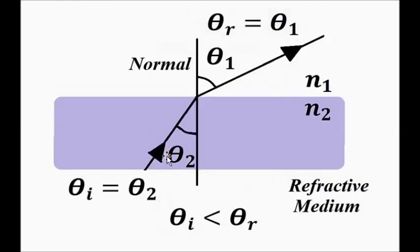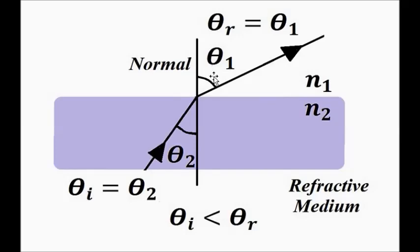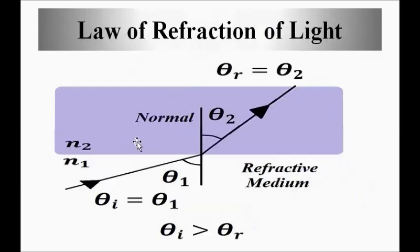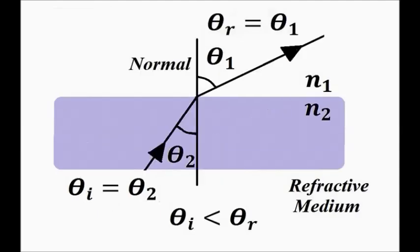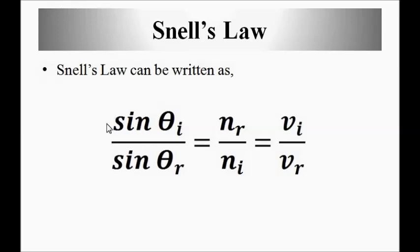Now, if we reverse the scenario and the same ray travels from the denser medium to the rarer medium, the ray will bend away from the normal. In that case, the angle of refraction will be greater than the angle of incidence. So, two key points: when light travels from a rarer medium to a denser medium, the refracted ray bends towards the normal; when it travels from a denser to a rarer medium, it bends away from the normal.